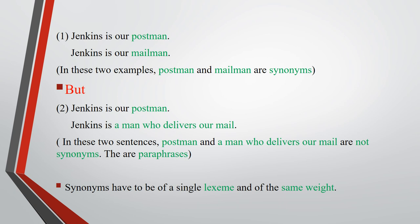Consider these two examples: 'Jenkins is our postman' and 'Jenkins is our mailman.' Here, the predicates 'postman' and 'mailman' are synonymous. However, in the sentences 'Jenkins is our postman' and 'Jenkins is a man who delivers our mail,' 'postman' and 'a man who delivers our mail' are not synonymous, because synonyms have to be of a single lexeme and of the same weight.